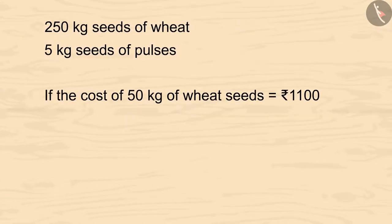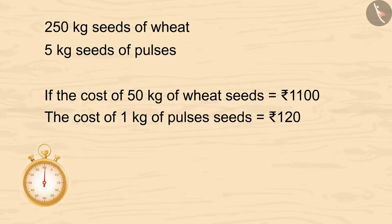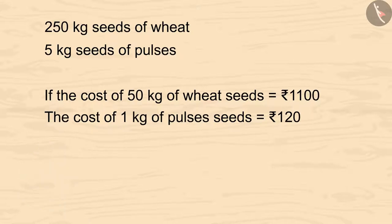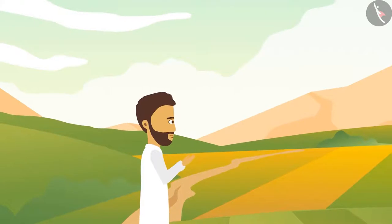If the cost of 50 kilograms of wheat seeds is 1,100 rupees and the cost of 1 kilogram of pulse seeds is 120 rupees, how much money did Karim Bhai spend on pulse seeds? The cost of 1 kg of pulse seeds is 120 rupees, so the cost of 5 kg would be 120 × 5 = 600. Karim spent 600 rupees on pulse seeds.